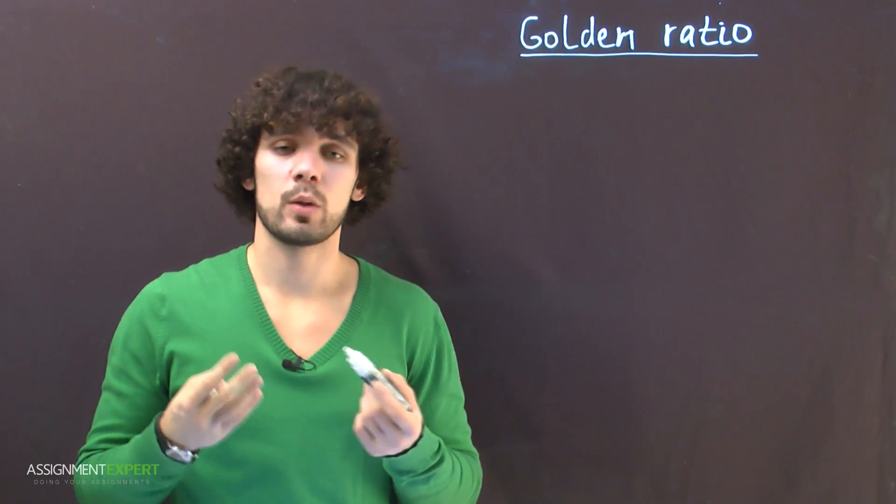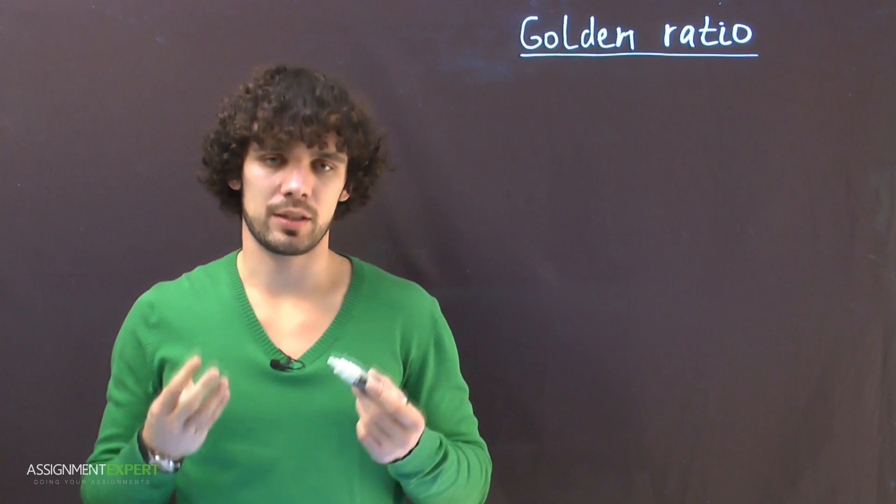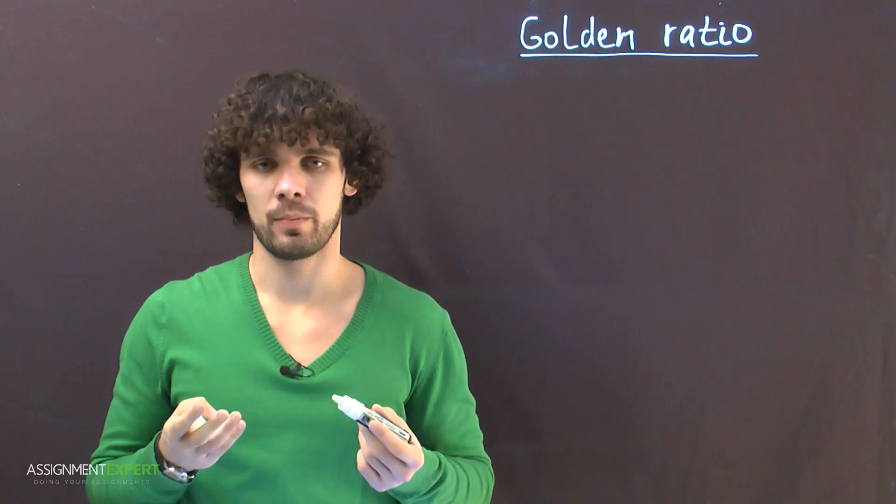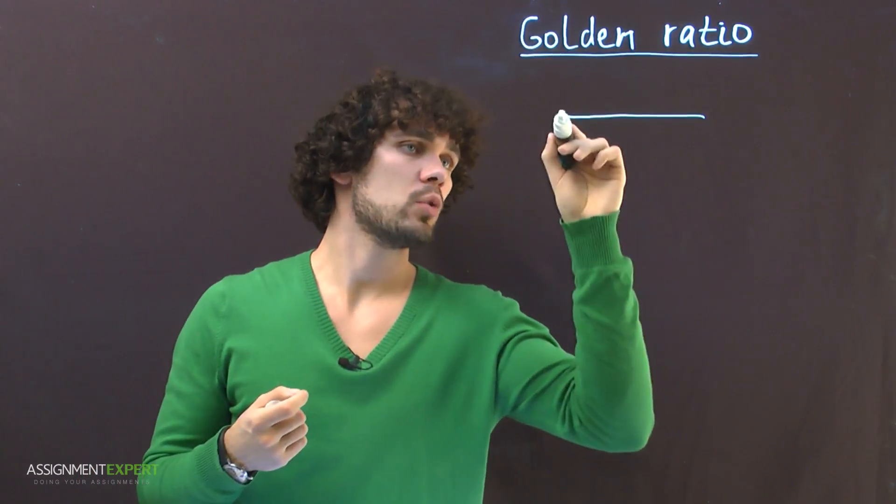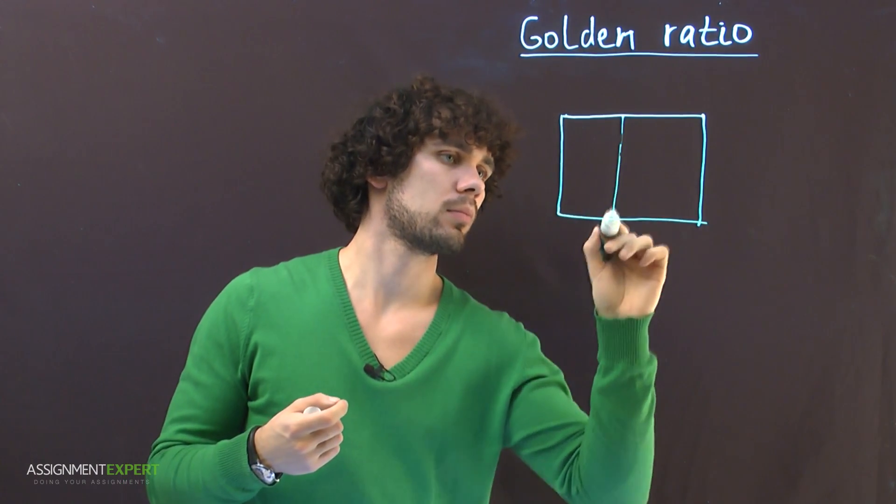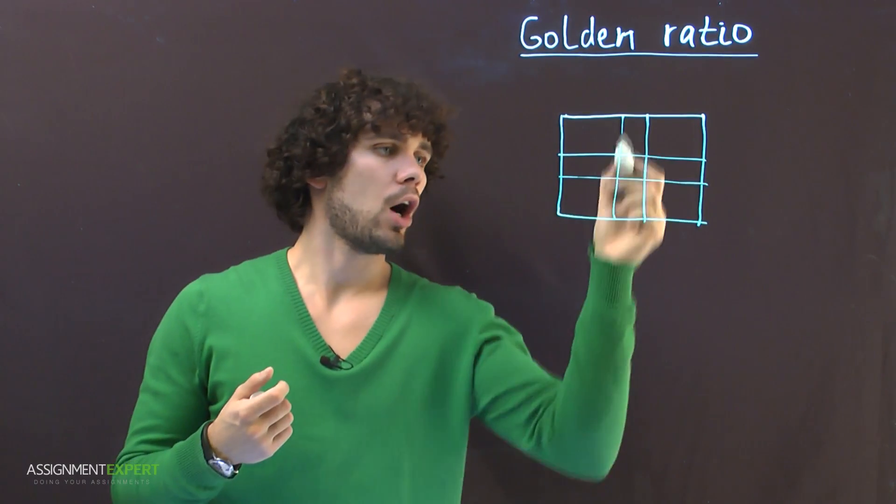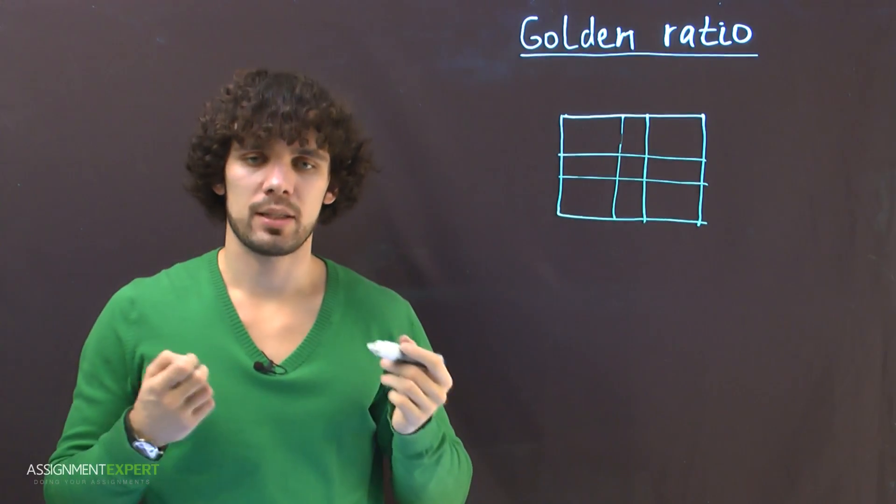You can also make use of golden ratio in art as the great masters of the past did. Say you're a novice photographer and you want to improve your artwork right away. The easiest method is to divide the frame by two vertical and horizontal lines in the golden proportions, and then try to place the main objects or characters on the lines or intersection points or as close to them as possible.